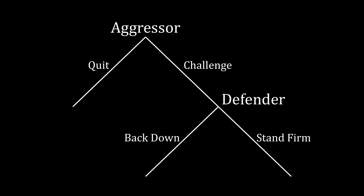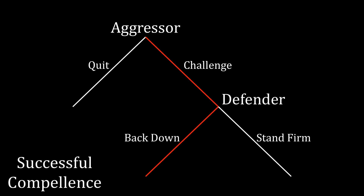To begin our analysis of nuclear compellence, I want to throw out the nuclear part for just a minute and focus on what compellence means. We've seen this simple escalation game before. An aggressor chooses whether to quit straight away or challenge the status quo. If the aggressor challenges, the defender chooses to stand firm or back down. If the aggressor challenges and the defender backs down, we might say this is an instance of successful compellence. The aggressor wanted something to change, called out the defender, and rather than fight, the defender backed down and let the aggressor take it.